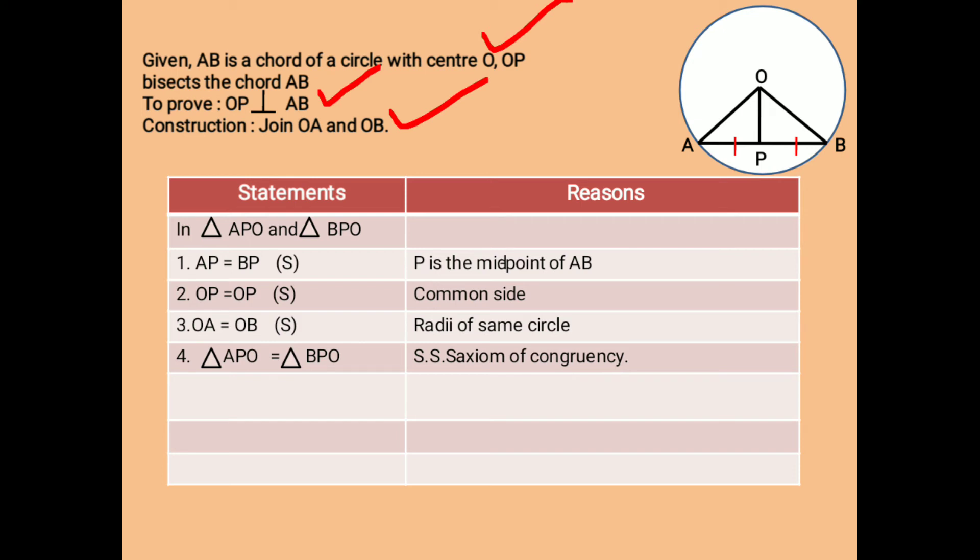Now, standing on the properties of congruency, we can say that angle APO and angle BPO are equal as they are the corresponding angles of two congruent triangles.